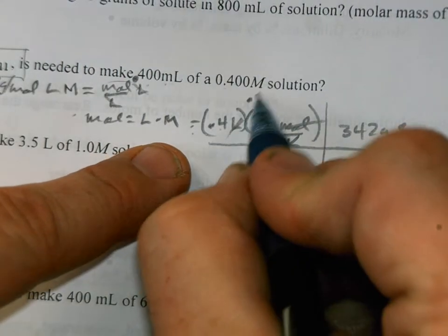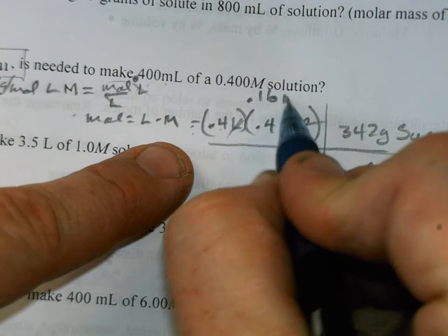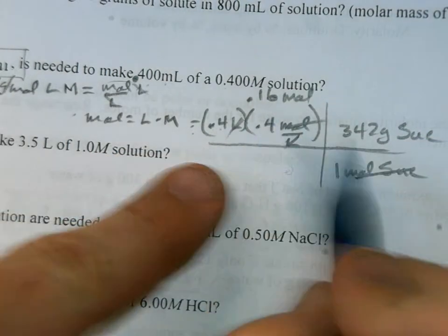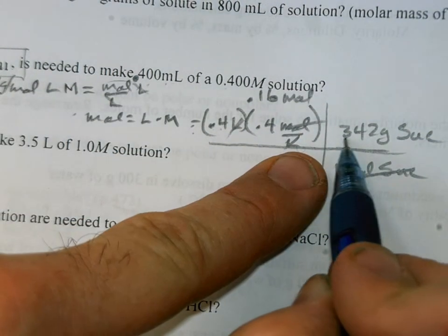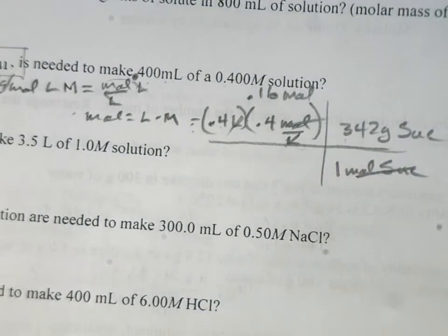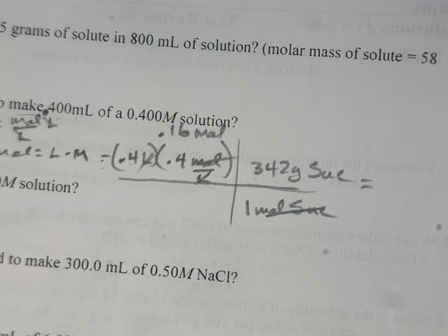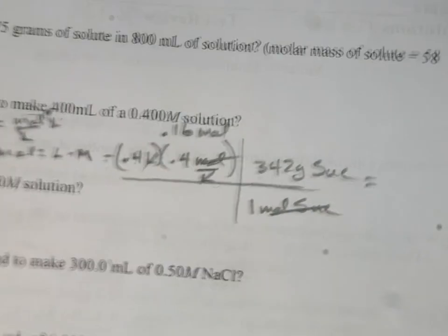Now, can we agree, what is 0.4 times 0.4? 0.16. That's what I thought, but I want to always be careful when I'm, so we got 0.16 times 4, excuse me, 0.16 times 342. At that point, I'm just going to go on. You can do the math. That's how you solve it. So we're going to go on. We're getting short on time.